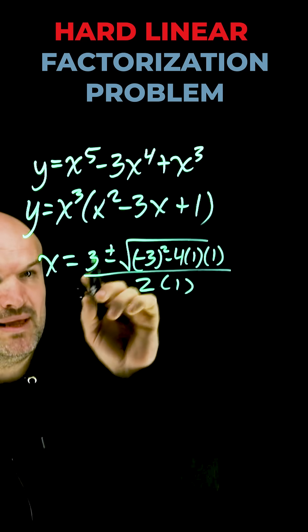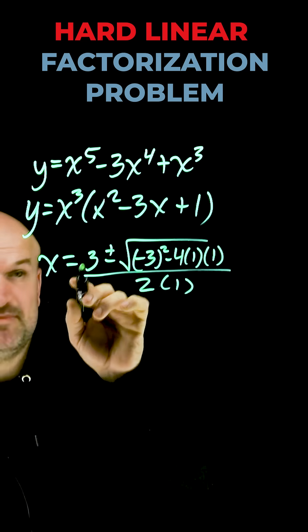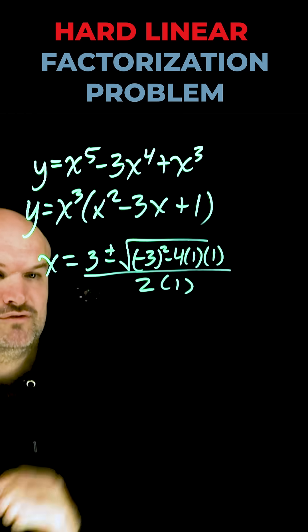Okay, remember quadratic formula, opposite of b so since that's negative the opposite is positive. Square root, negative 3 squared minus 4 times a times c all over 2a.